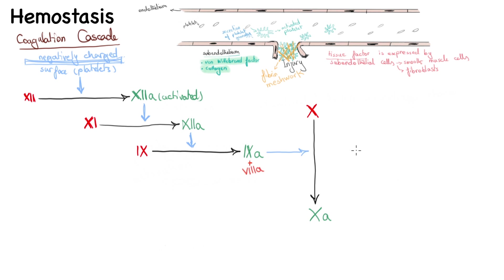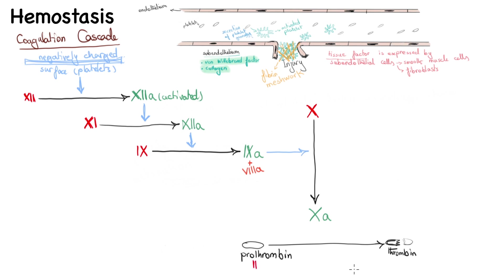The next step is important: prothrombin — the inactive precursor of thrombin, also called factor 2 — is converted into its active form thrombin (factor 2a) by cleaving a part of it off. This reaction is activated by factor 10a, except 10a cannot do this by itself and requires the help of factor 5a as a cofactor.